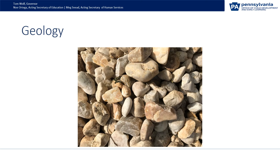Geology is an earth science concerned with the solid earth, the rocks of which it is composed, and the processes by which they change over time. Geology can also include the study of solid features of any terrestrial planet or natural satellite, such as Mars or the Moon. You can play with a gem match — find a book with gems or rocks and have children identify them. You can compare different types of rocks: some are smooth, some rough, some have pretty colors, some are small or large, some are soft or hard. You can build towers from rocks, or make a rock band by adding different types of rocks to different containers and shaking them.